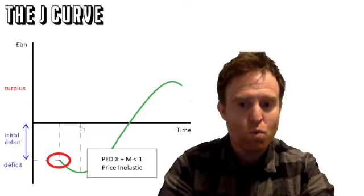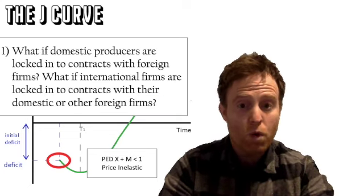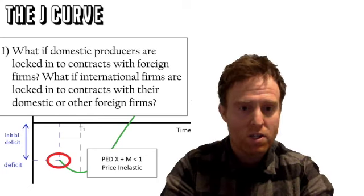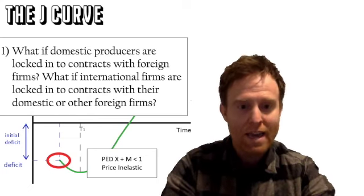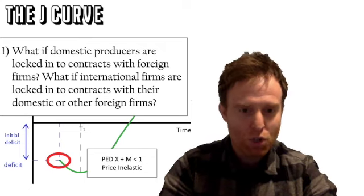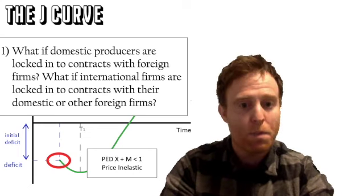Some of the reasons why the J-curve believed that in the short term it was inelastic: first of all, think about it from the point of view of contracts. We've got our weak pound, imports dearer, exports cheaper because the devaluation will weaken that currency.